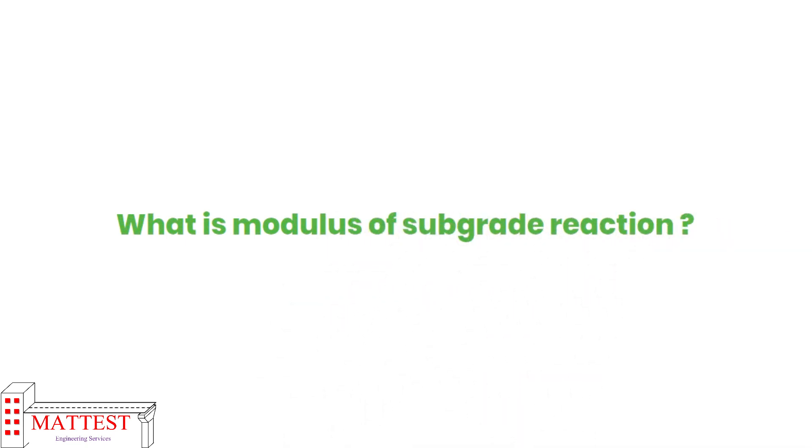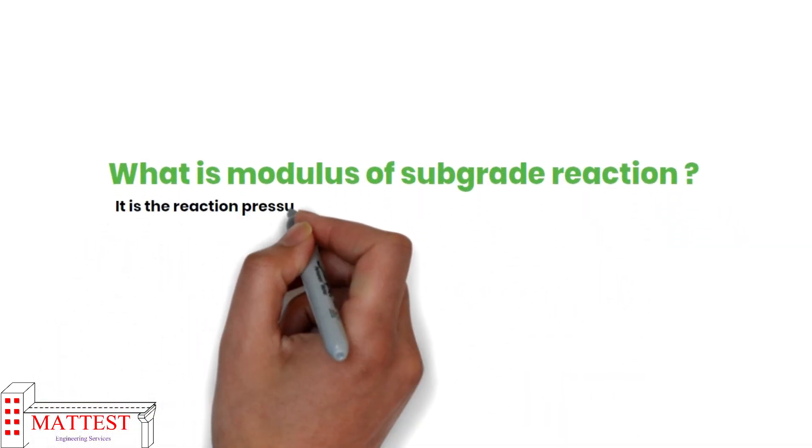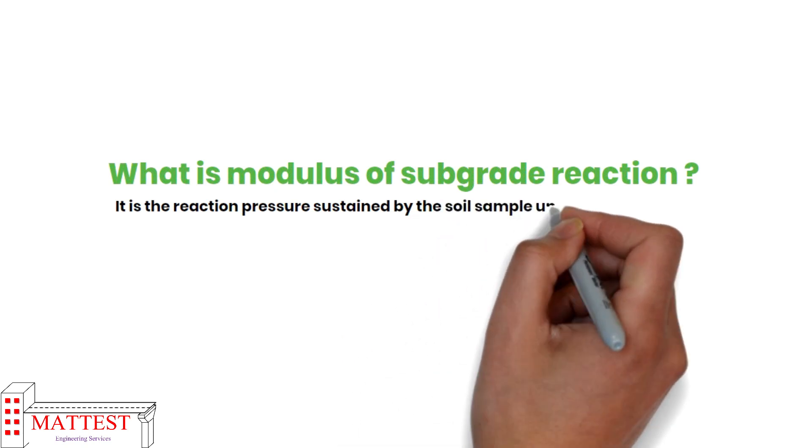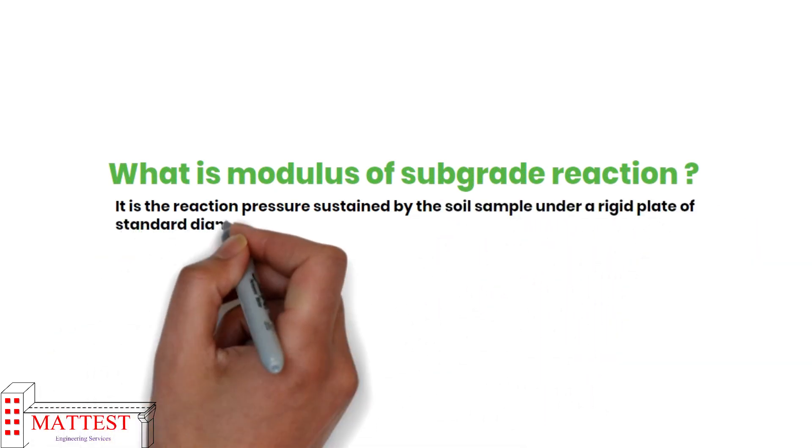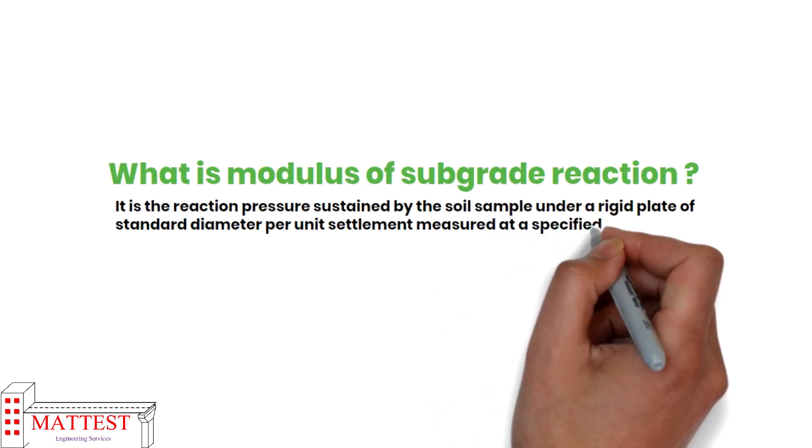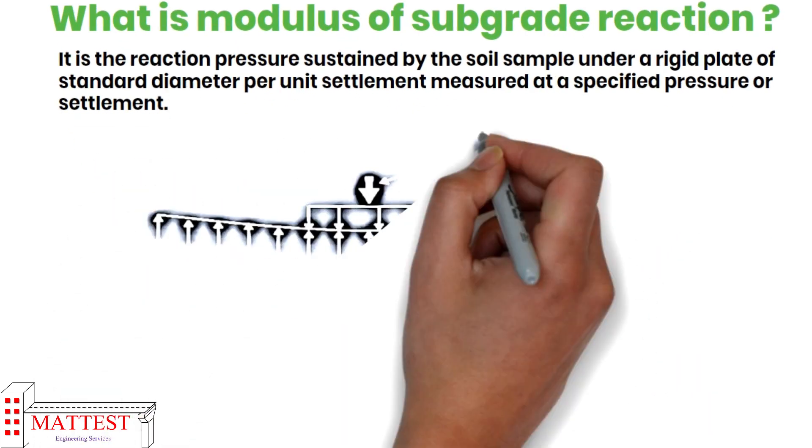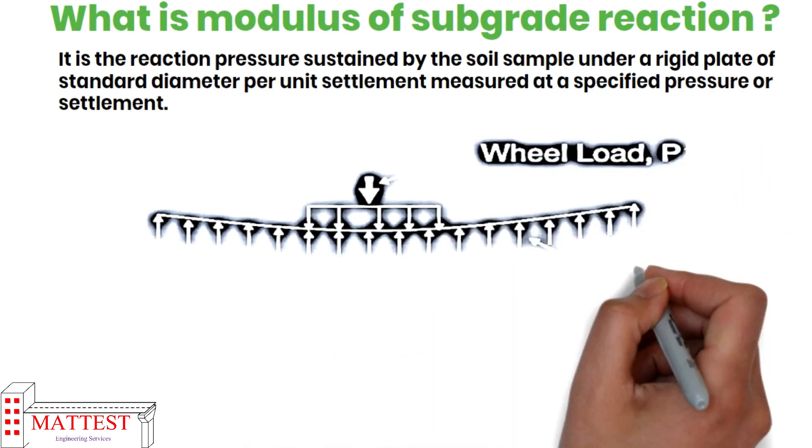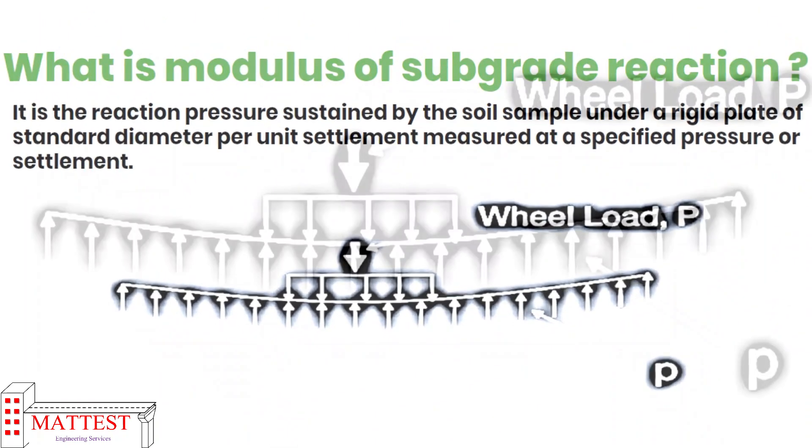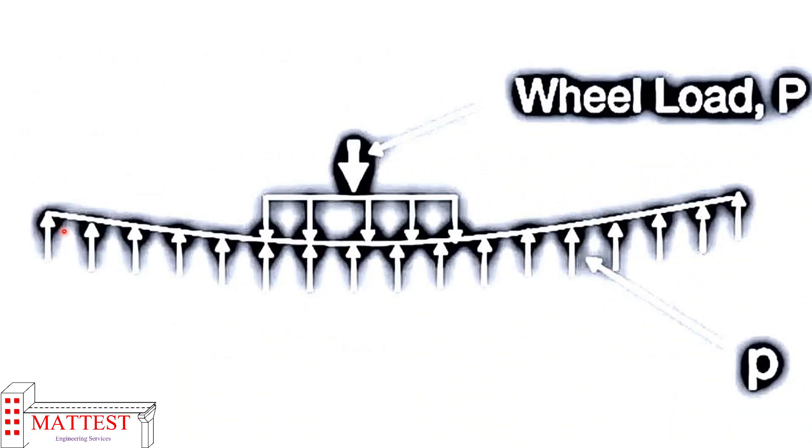Now let's understand what is modulus of subgrade reaction. It is the reaction pressure sustained by the soil sample under a rigid plate of standard diameter per unit settlement measured at a specified settlement or pressure. When load is applied on a surface we can see some amount of deflection due to that load. As you can see here in the diagram, there is some amount of deflection due to that wheel load, but after some time the surface will come into their original position and that resistance of load is called modulus of subgrade reaction.